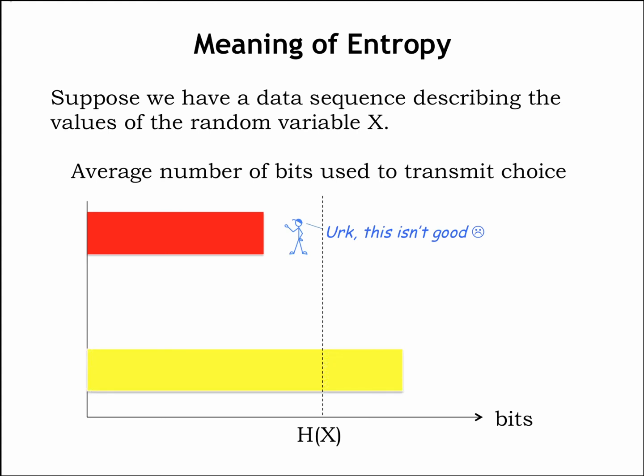On the other hand, if we send, on the average, more than H(x) bits to describe the sequence of values, we will not be making the most effective use of our resources, since the same information might have been able to be represented with fewer bits. This is OK, but perhaps with some insights we could do better.